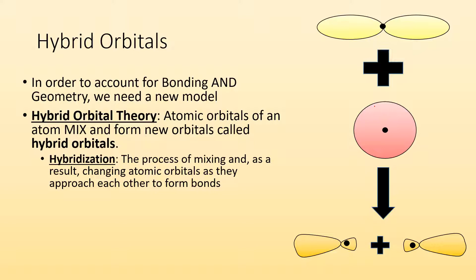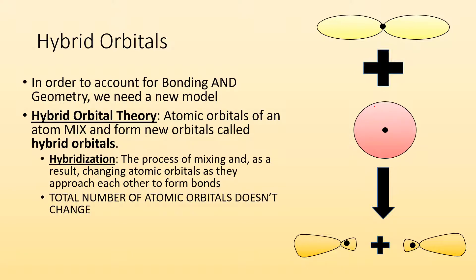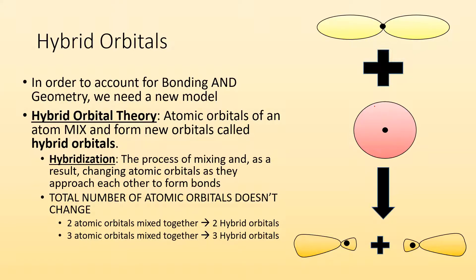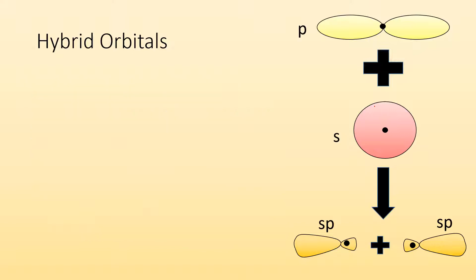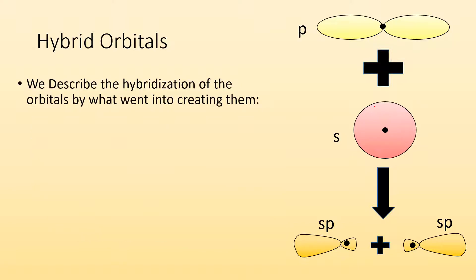We need to start talking about how electrons are behaving on the molecule. The total number of atomic orbitals isn't changing. If I take two atomic orbitals and mix them together, I'm going to end up with two hybrid orbitals — not one magic orbital. If I put two atomic orbitals in, two hybrid orbitals come out. If I put three atomic orbitals in, I get three hybrid orbitals. When we describe the hybridization of these orbitals, we describe them by what went into creating them.